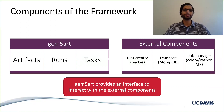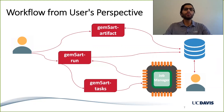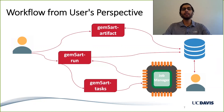From a user's perspective, the workflow looks like this: a user would use the Gem5Art artifact library to create all artifacts necessary to run any experiment, and these artifacts would be stored in the database. Then the user would use the Gem5Art run library to create run objects for the experiments. Finally, the Gem5Art tasks library would use those run objects and execute them on actual hardware using a job manager. Once results are generated, they would also be stored in the database, and a user can query the database through Python API of MongoDB or through an interface provided by Gem5Art itself.